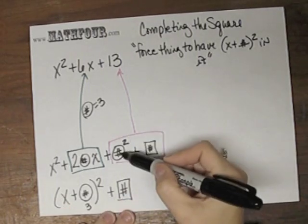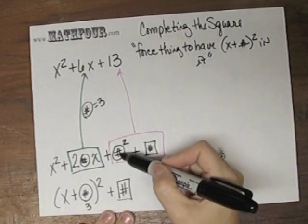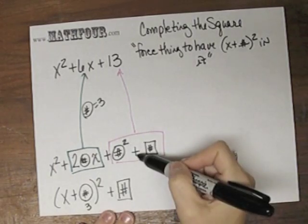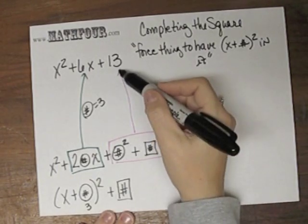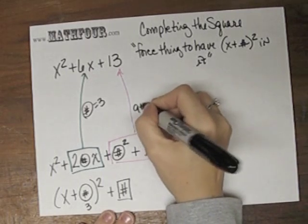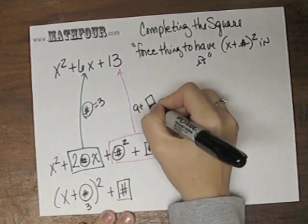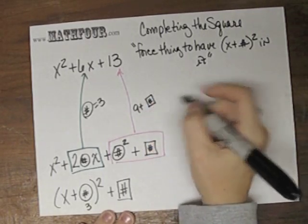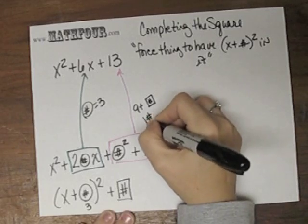And then you've got this piece, this is 3 squared, which is 9 plus what is 13. So this is 9 plus this guy has to be 13. So this guy has to be 4.